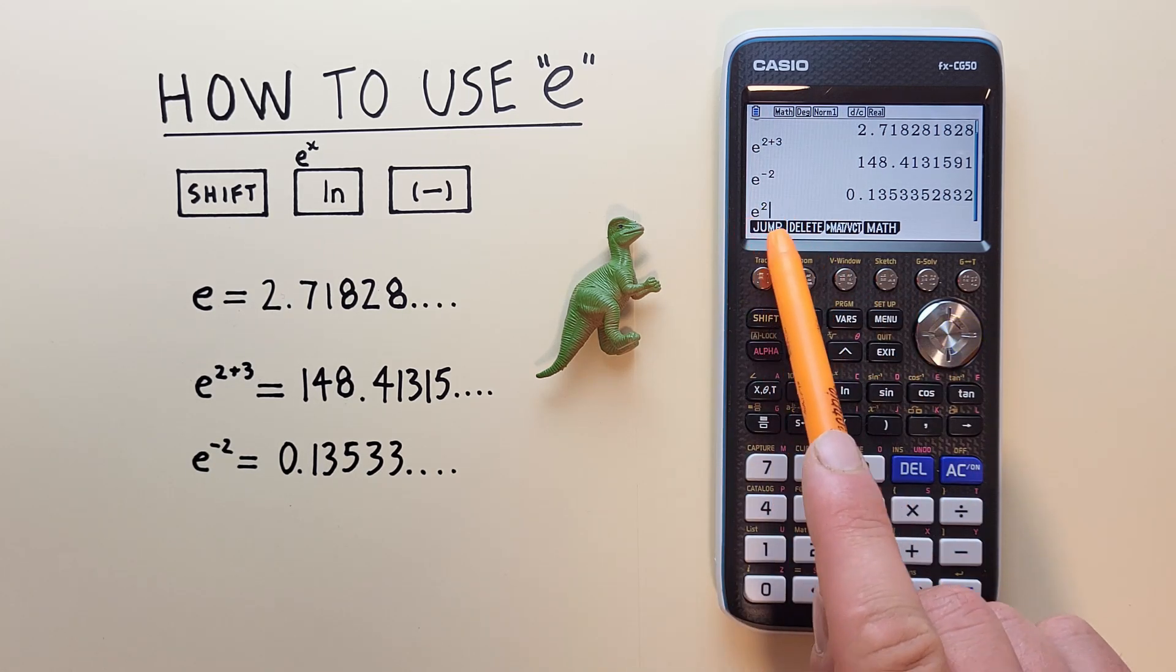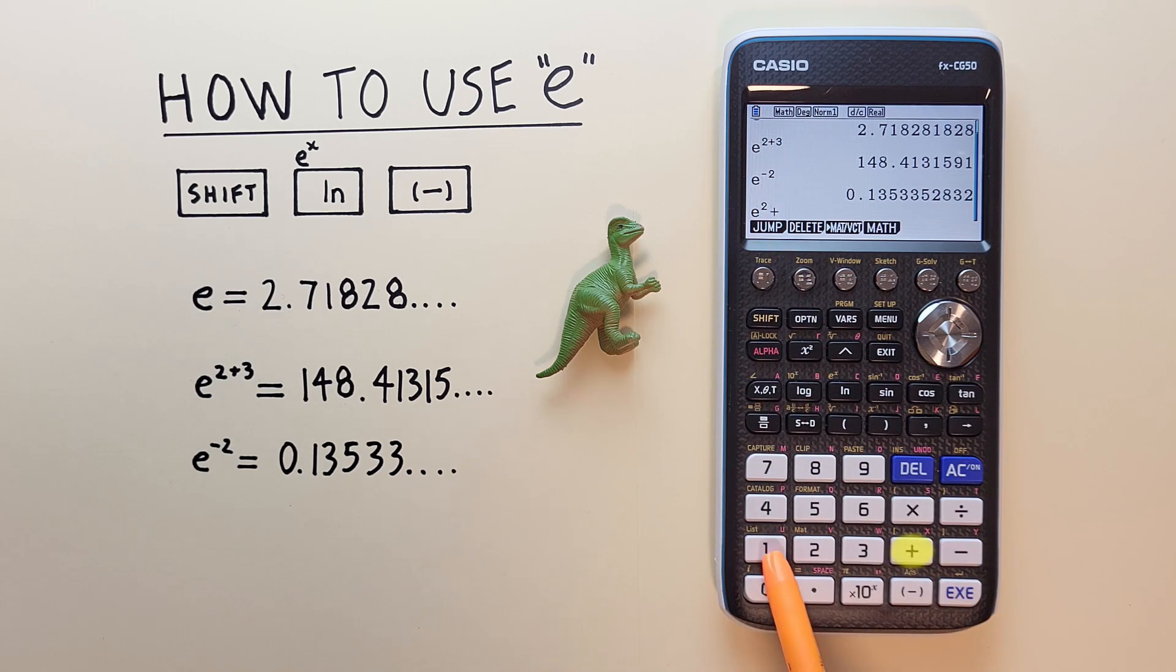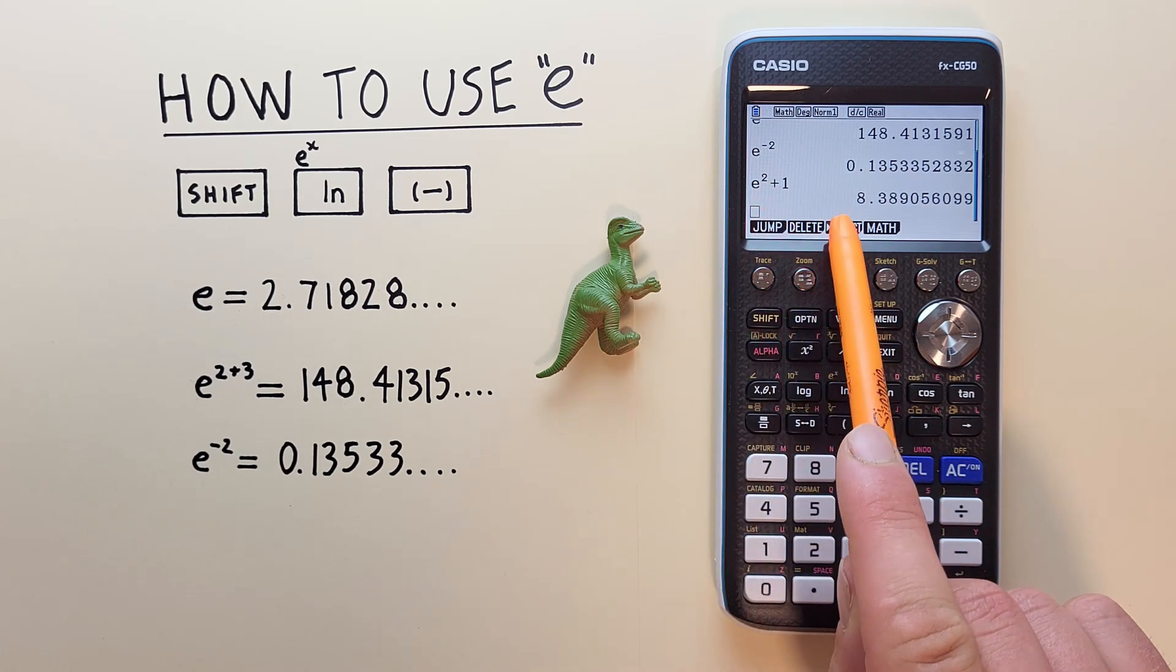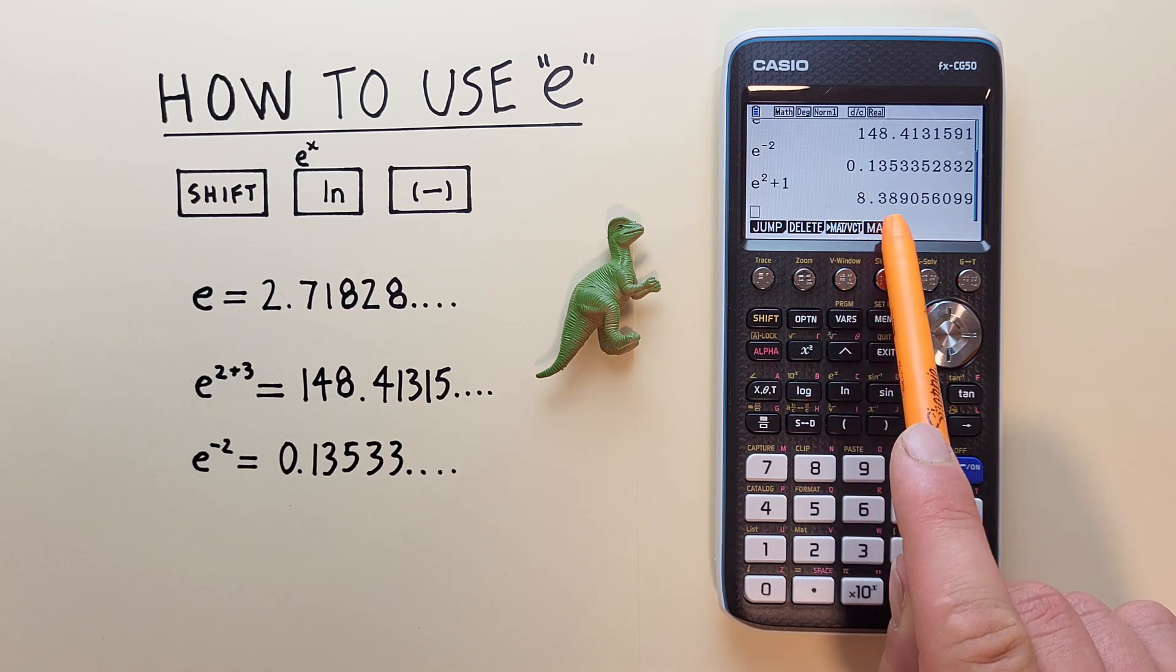Our cursor is back on the main line. And now we can go plus 1, and hit the exe. And we see we get e squared, or e to the power of 2 plus 1 is equal to 8.38905 etc.